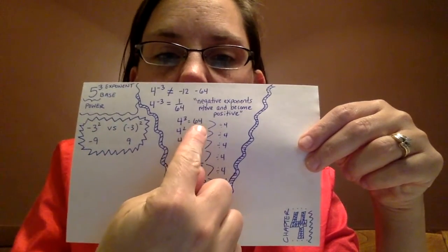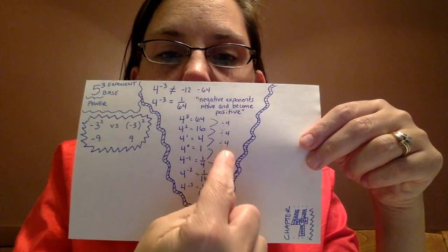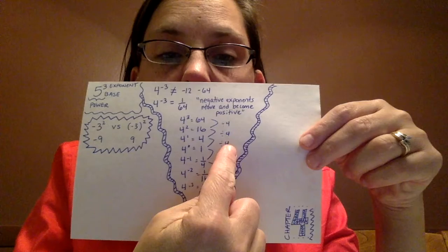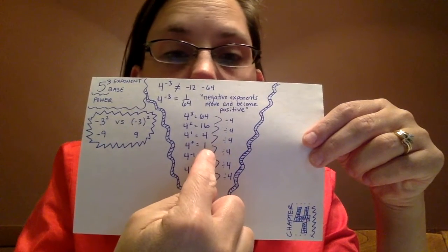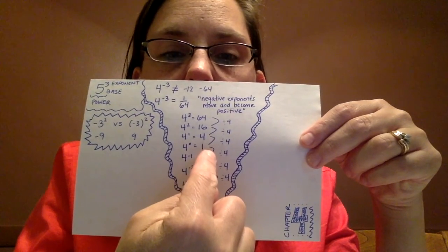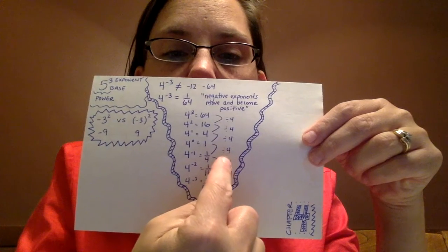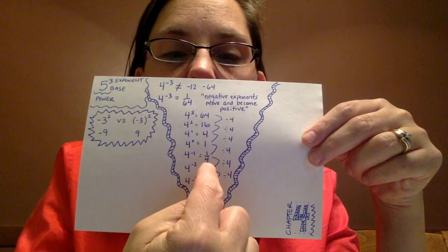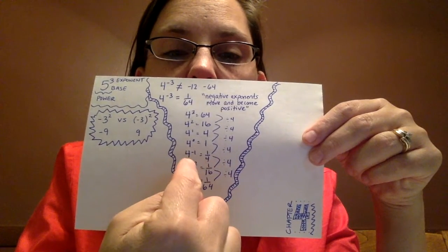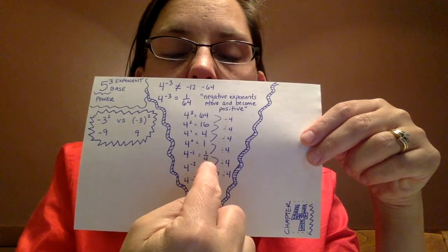Because the pattern shows here, divide by 4, divide by 4. What's 4 divided by 4? Not 0, 1. 1 divided by 4 is 1 fourth. So 4 to the negative 1 power equals 1 fourth.